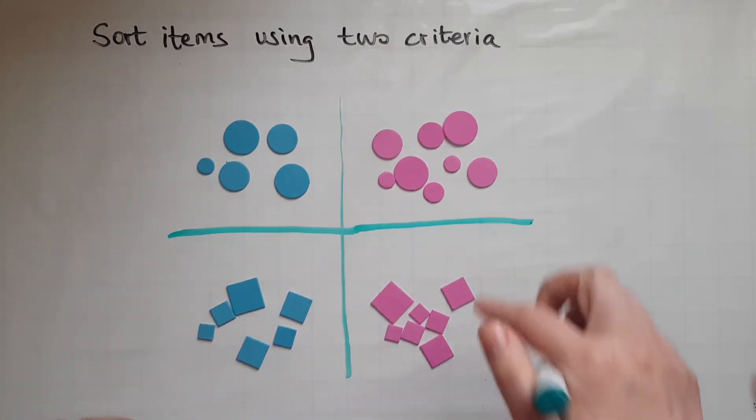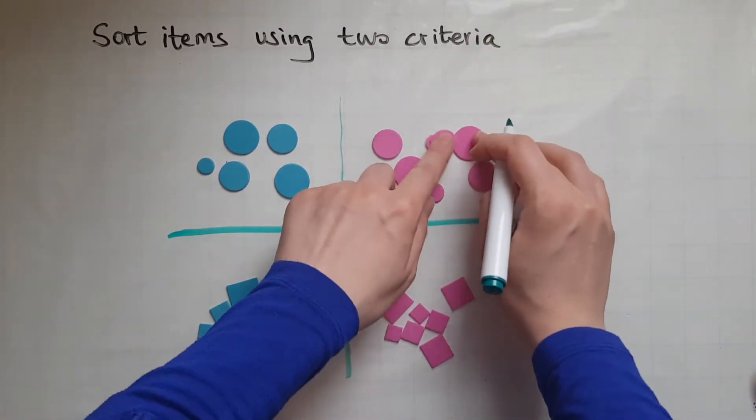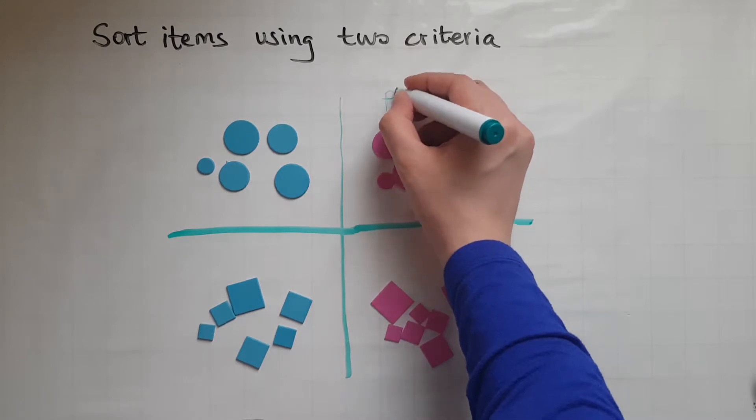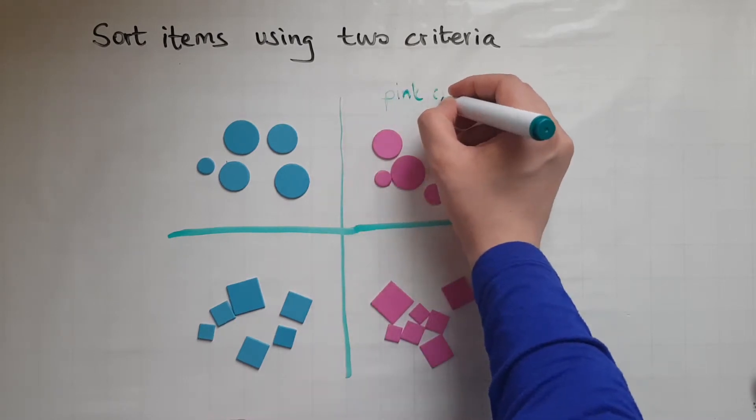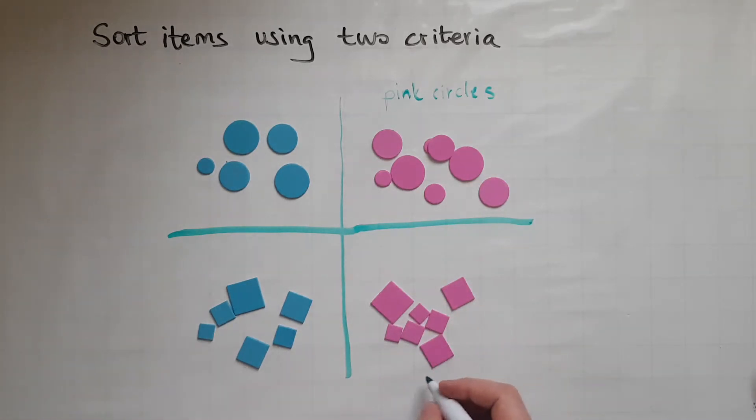So what I have here is pink circles. And here I have pink squares.